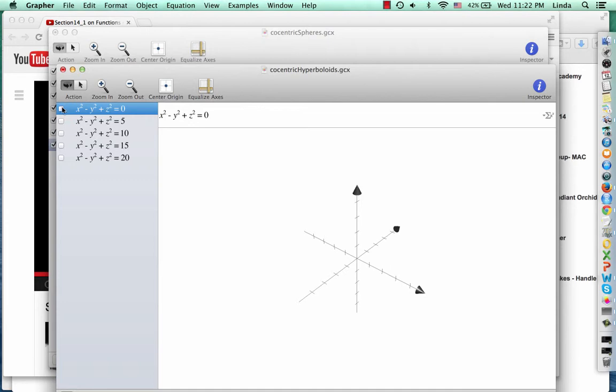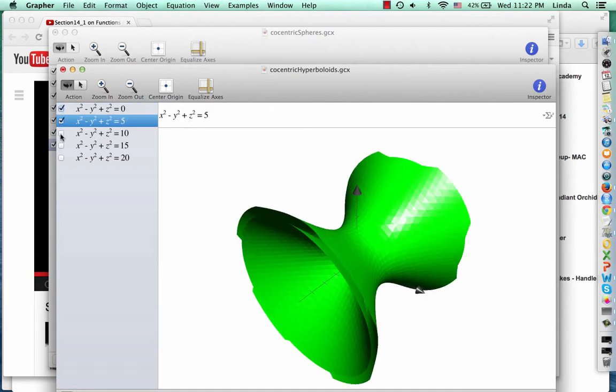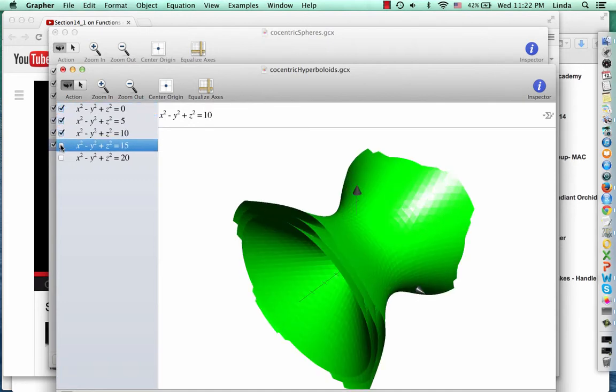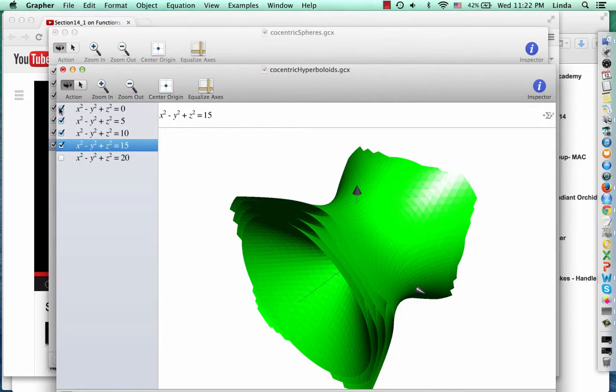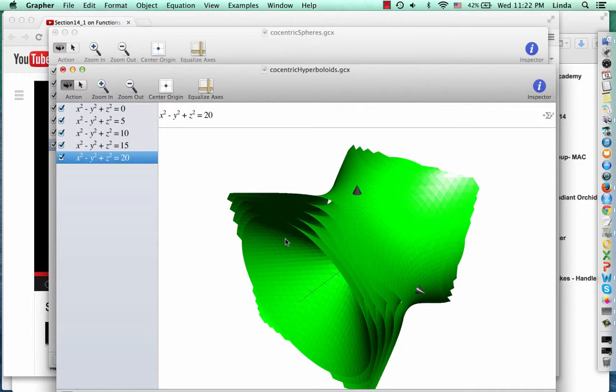For the second function, the level surfaces are concentric hyperboloids. Actually, the inner one is a cone, and the rest are hyperboloids. Kind of makes a nice layered look.